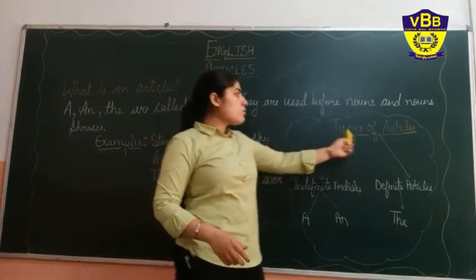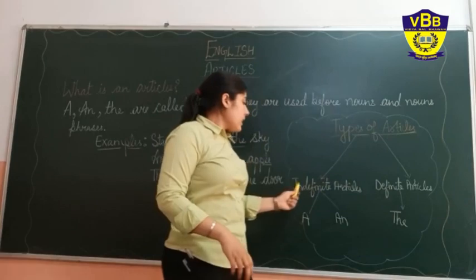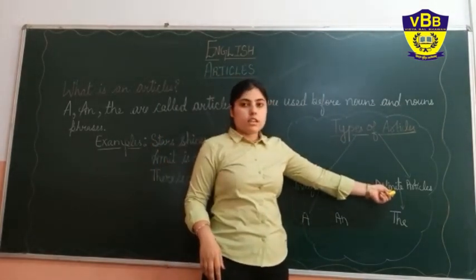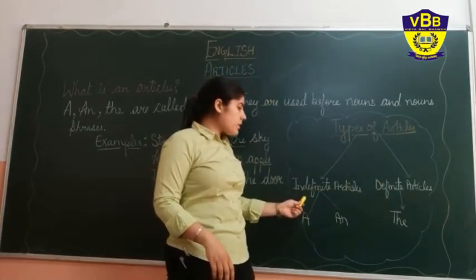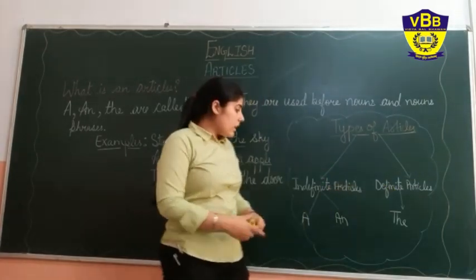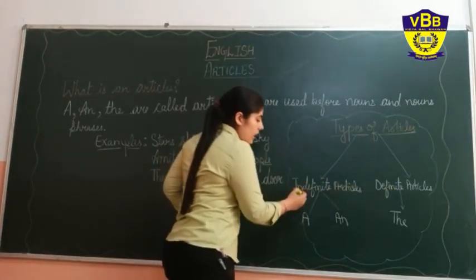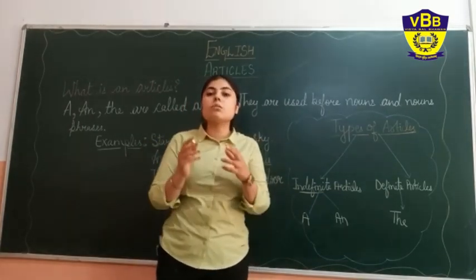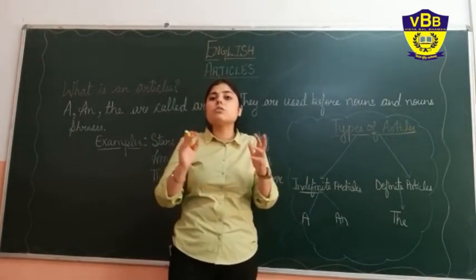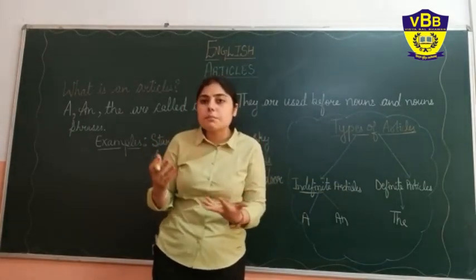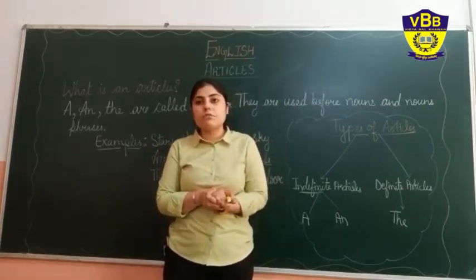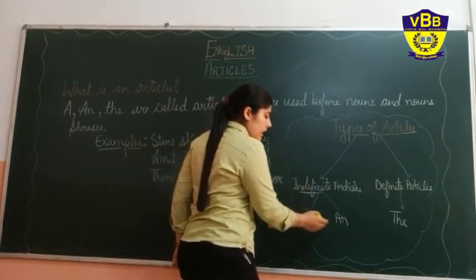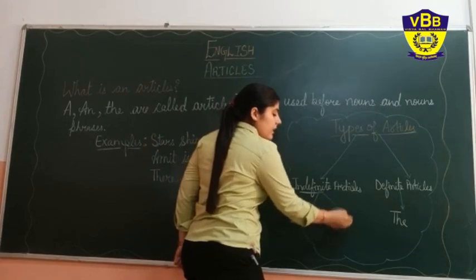Now, there are two types of articles: indefinite articles and definite articles. Two types — indefinite and definite. Indefinite means something which is not defined, something which is not specific. Indefinite articles are two: A and An.